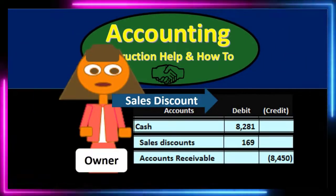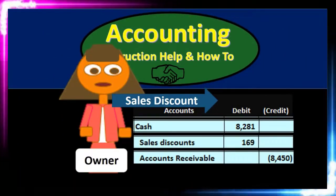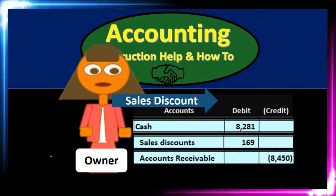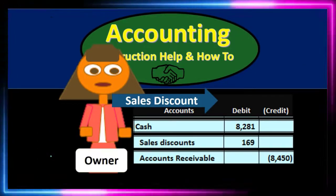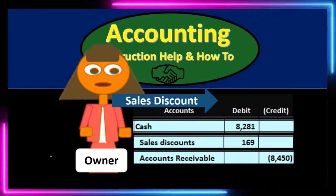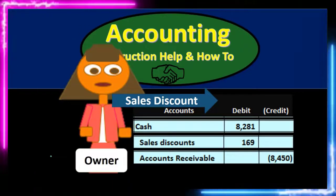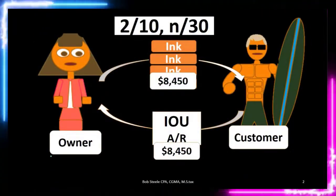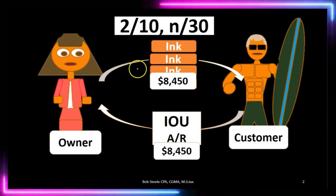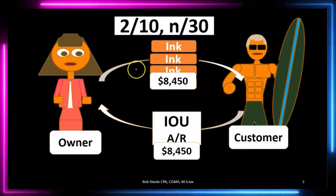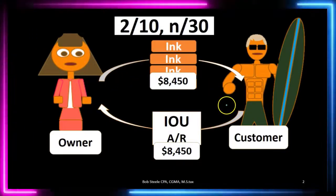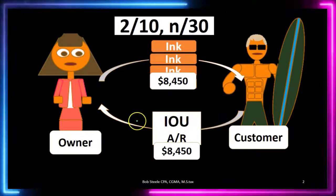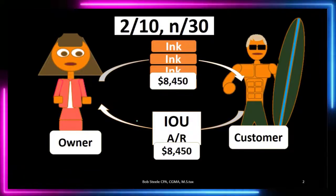In this lecture we're going to record the journal entry related to a sales discount. The owner is going to provide a sales discount to the customer. First, we look at the original transaction: the owner is selling inventory to the customer, who has not yet paid — they're going to pay with an IOU. The sales price is $8,450.